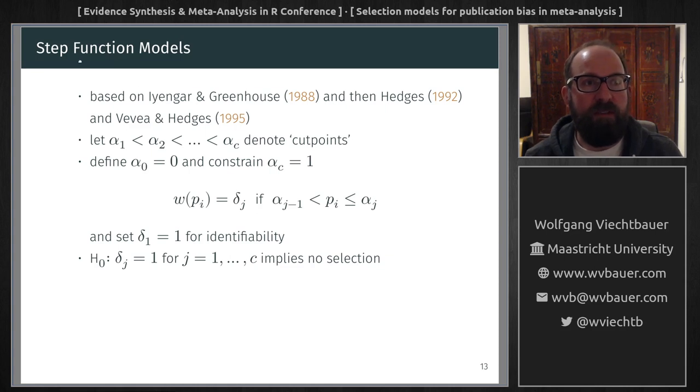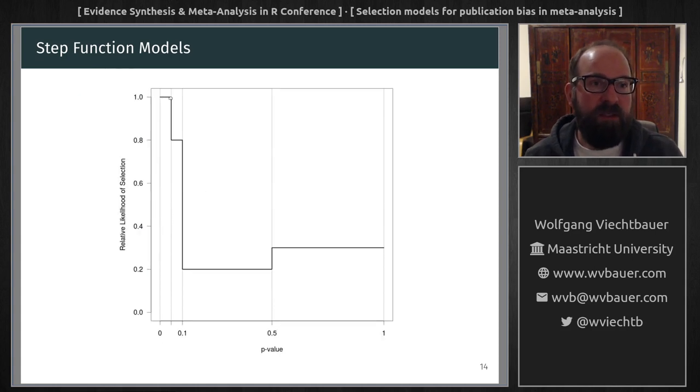But another group of models are these step function models. Here we define some cut points. And within the intervals defined by these cut points, the likelihood of selection is constant. Now, we set typically these cut points at inherently interesting p-values such as 0.05. So that is, of course, that point where a significant effect turns into a non-significant one, or 0.5 where for one-sided p-values, the direction of the effect flips.